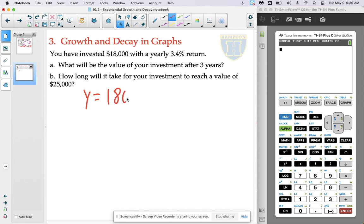Y equals $18,000 times 1.034 to the X, where X is a representation for the number of years and Y is a representation of the amount of money that we will have at the end.